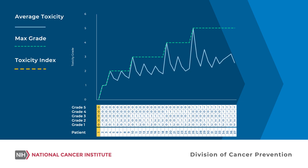The first patient has no toxicities, resulting in a TI score, maximum grade, and average grade of 0, all in agreement. As toxicities increase, the TI score rises smoothly while the maximum grade steps up only when the highest reported grade increases. The average grade fluctuates, lowering when more low-grade toxicities are observed in addition to the highest grade toxicity compared to the highest grade toxicity alone.